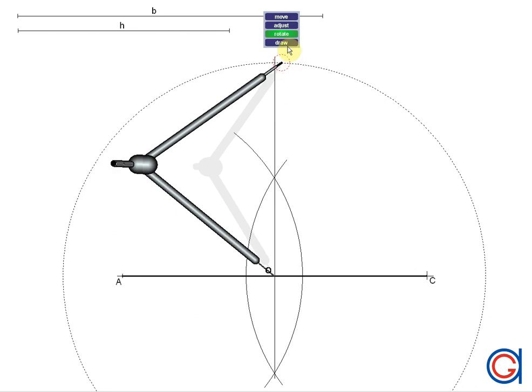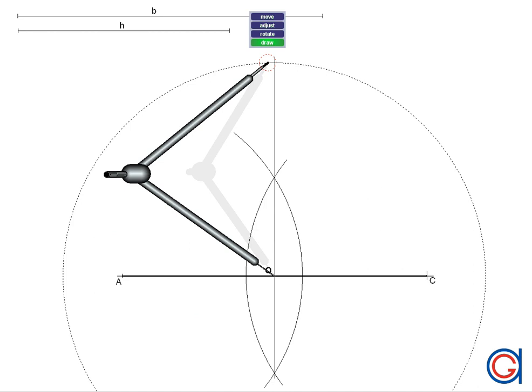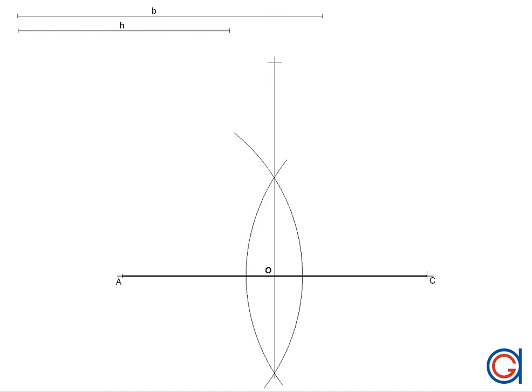Where it cuts, this will be the third vertex of the isosceles triangle that we want to draw, which we will call B, vertex B.